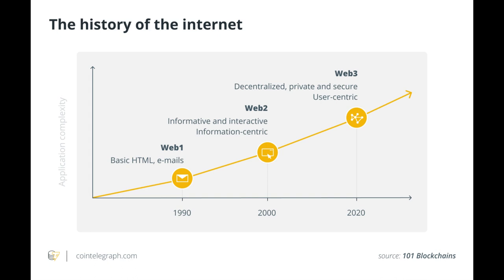But we have started to see the negative externalities of the topography of Web2, which is essentially large tech platforms — the Googles of the world, the Facebooks of the world. We've seen the rise of what people call surveillance capitalism, large-scale data breaches, and big tech colluding with government agencies. All of this is happening and has been happening, and I think more and more people have woken up to it.